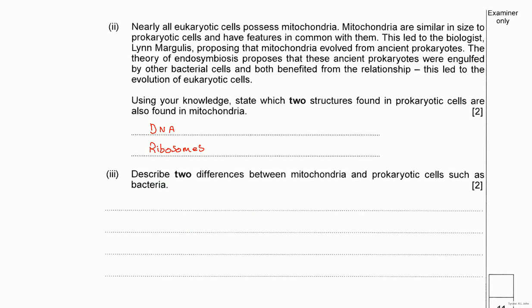Right, describe two differences between mitochondria and prokaryotic cells such as bacteria. Right, with bacteria then they have a cell wall, mitochondria do not. So that would be one marking point where again you've described one feature between the mitochondria and the bacteria.